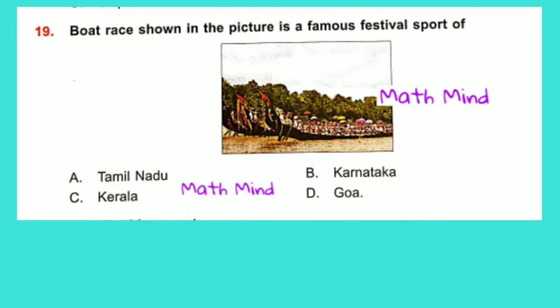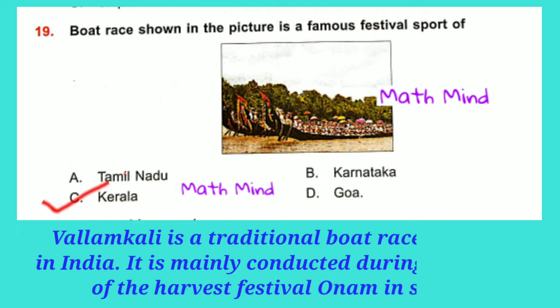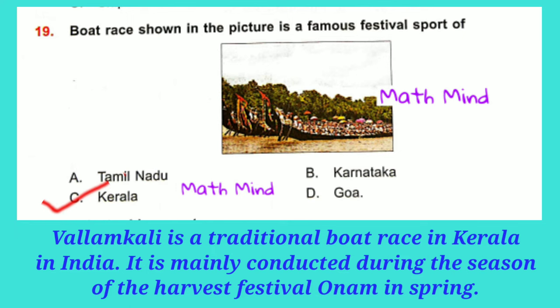Question No. 19: The boat race shown in the picture is a famous festival sport of dash. The correct answer is C: Kerala. Pallankali is a traditional boat race in Kerala, India. It is mainly conducted during the harvest festival Onam in spring.